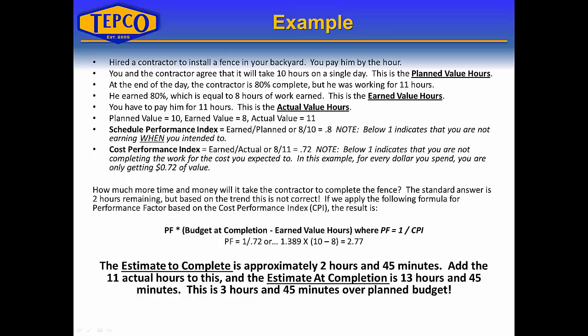How much more time and money will it take to complete the fence? A typical answer is 'another 2 hours because he earned 8,' but based on the trend, that is not correct. Applying a performance factor based on CPI: the performance factor is 1 divided by CPI, so 1 divided by 0.72 equals 1.389, times (10 minus 8) equals 2.77 hours — approximately 2 hours and 45 minutes to complete. Add the 11 actual hours, and the estimate at completion is 13 hours and 45 minutes — 3 hours and 45 minutes over the planned budget.